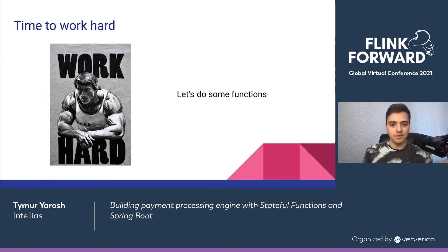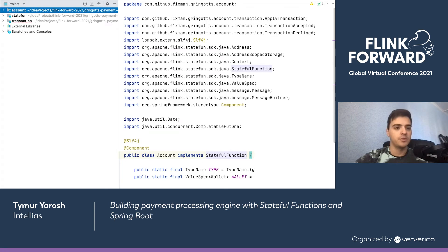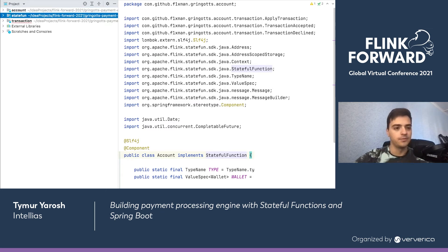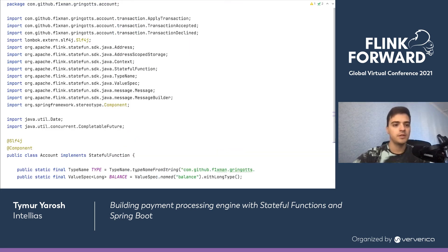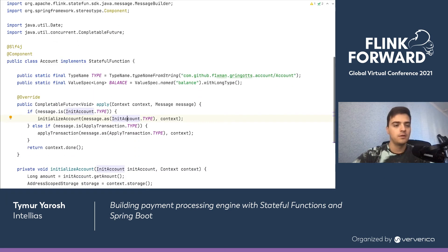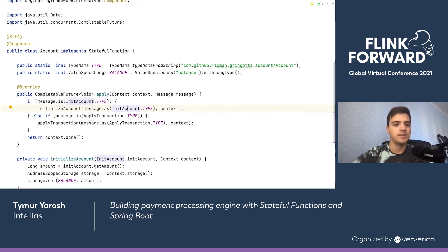Now it's time to write some code. Let's review the modules I've prepared. The first is the account remote module, which contains a namespace for the account function. The second is the statefun module, which contains the configuration of Stateful Functions. The last one is the transaction module, containing a namespace for the transaction function. Both namespaces are remote modules implemented as Spring Boot applications.